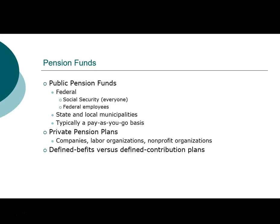Private pension plans are different and are typically offered by companies. The main characteristic that distinguishes private pension plans is whether they are defined benefit versus defined contribution. In a defined benefit plan, the company or organization takes the risk because they are guaranteeing the benefit an individual will receive in retirement. In a defined contribution plan, the individual takes on the risk — the company contributes money to the plan today, and the individual is responsible for investing those contributions; however those contributions perform in the future, the individual takes the risk.